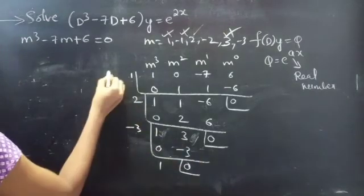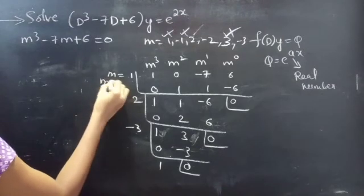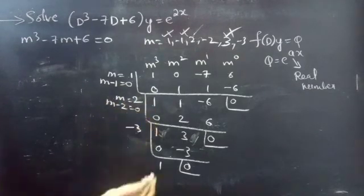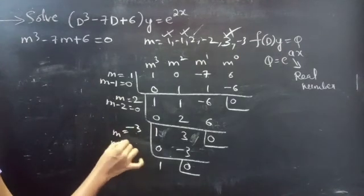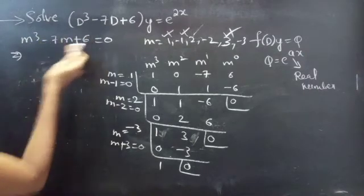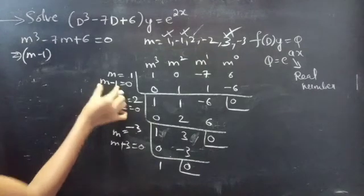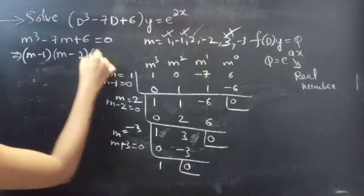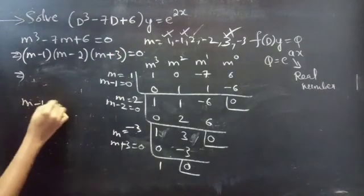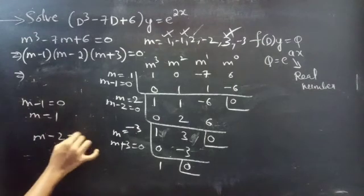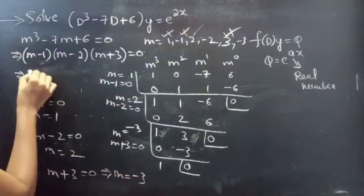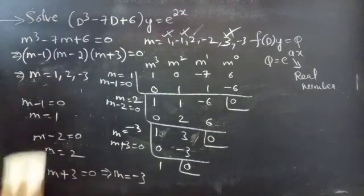So here m = 1 gives factor (m - 1), m = 2 gives factor (m - 2), and m = -3 gives factor (m + 3). Therefore the factors of m³ - 7m + 6 are (m - 1)(m - 2)(m + 3). Equating each factor to zero gives roots m = 1, 2, and -3, which are real and distinct.